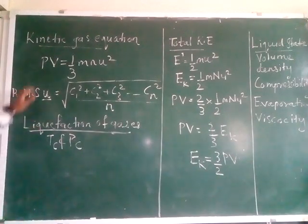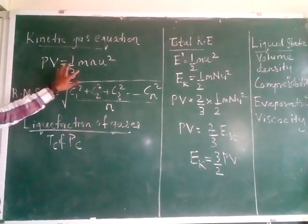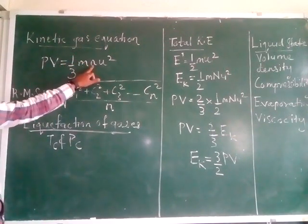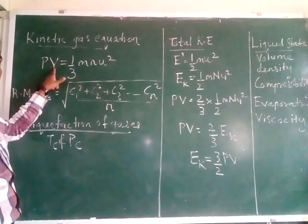Where P is the pressure of the gas, V is the volume of the gas, m is the mass of the molecules of the gas, and n means the number of molecules present in V volume of the gas.